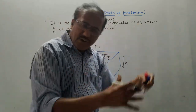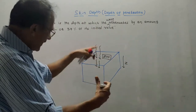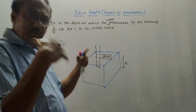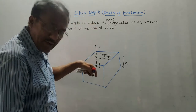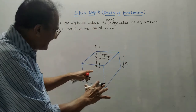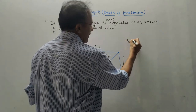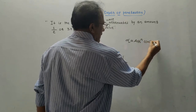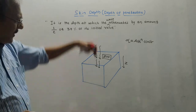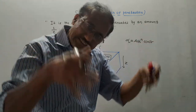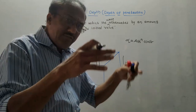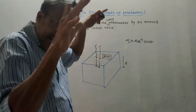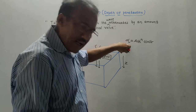Every time this wave has to overcome the opposition provided by the conducting medium. This is not a perfect conductor. In practical cases, the conductor provides certain opposition, so the wave has to overcome this opposition. This opposition is related to one parameter denoted by alpha, and alpha is known as the attenuation constant. The amplitude of the wave goes on reducing — this attenuation is measured by the parameter alpha.